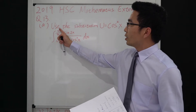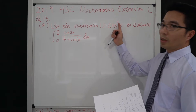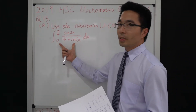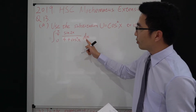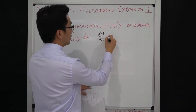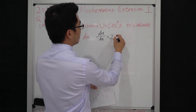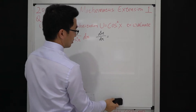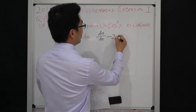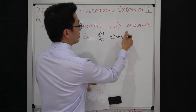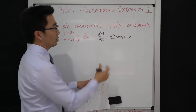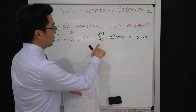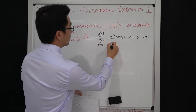The question is: use the substitution u equal to cos²x to evaluate this integration. Under this substitution, we have to change the integration from dx to du. We have du equal to negative 2 cos x times sin x, which by the chain rule equals negative sin 2x. So from here we have dx equal to du over negative sin 2x.